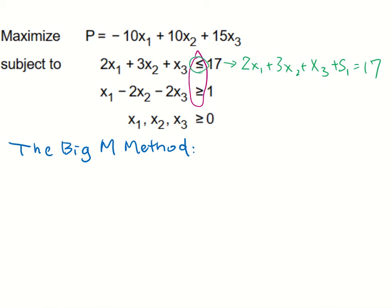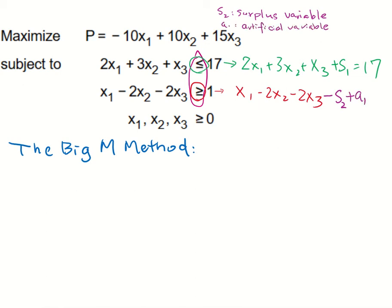The second inequality is different because it has greater than or equal to. This equation becomes x1 minus 2x2 minus 2x3, and since it has greater than or equal to, we subtract s2. This s2 is called the surplus variable. Every time we add a surplus variable we also need to add another variable called an artificial variable, a1, which equals 1.